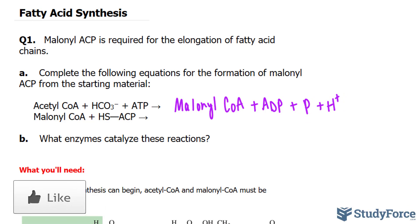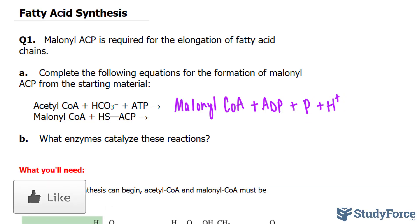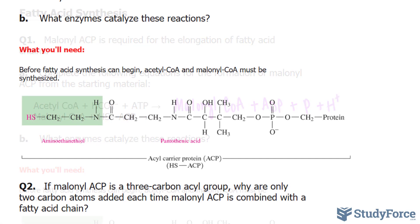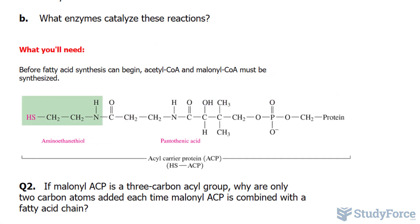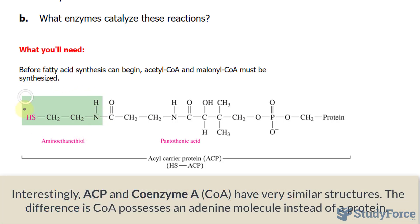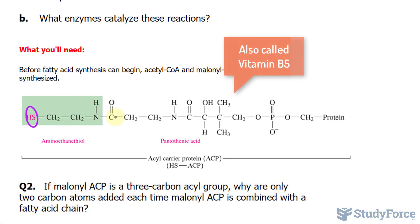Next, take a look at what ACP looks like. ACP means acyl carrier protein — it's a protein dedicated to carrying acyl groups for the formation of a fatty acid. It's a long molecule, and this one in particular has an amino acid at the very end, namely cysteine, which we can identify because of the sulfur atom at the end. We have cysteine, pantothenic acid, and then the protein.